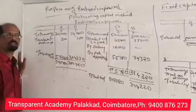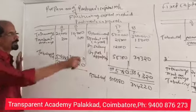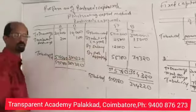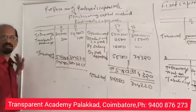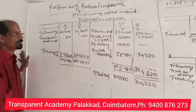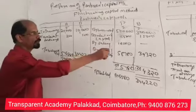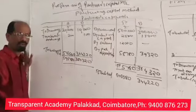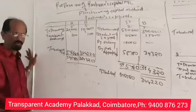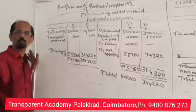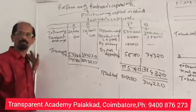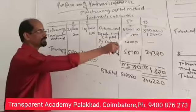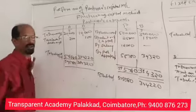If we have a partner's opening capital and it is an existing business, then we use 'By Balance b/d' — 5 lakhs and 3 lakhs. In this case, if the business is just starting, the entry will be 'By Bank' or 'By Cash' — 5 lakhs and 3 lakhs.